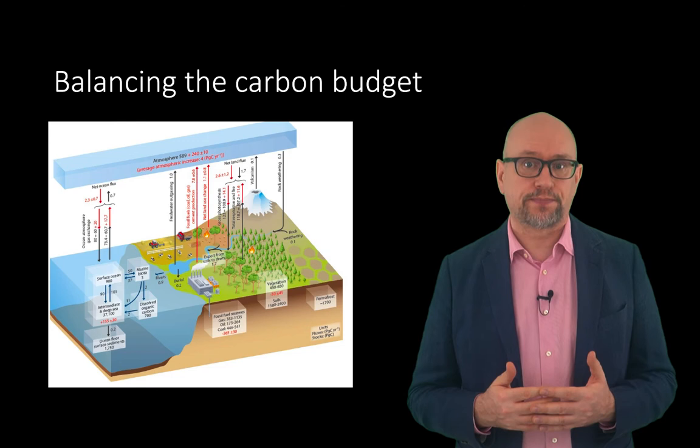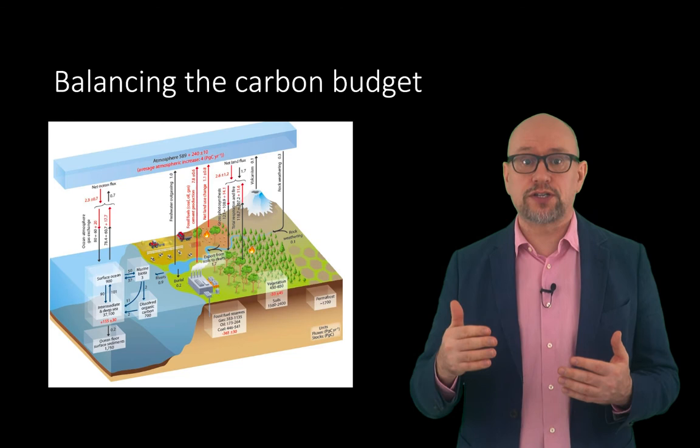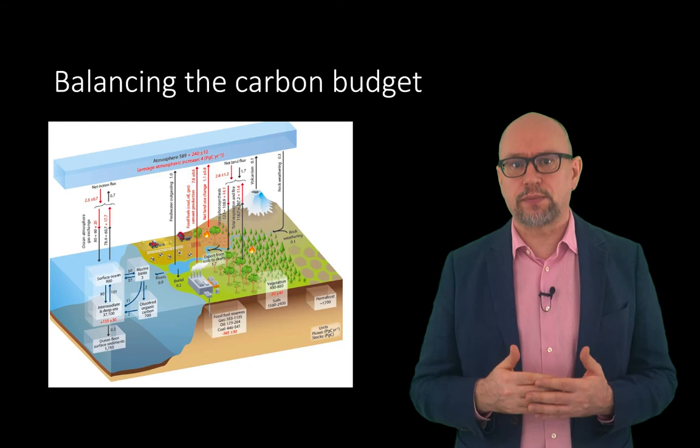A petagram is equivalent to a billion metric tonnes. The black numbers and arrows show the pre-industrial reservoirs and fluxes. The red numbers and arrows show the additional fluxes caused by human activities averaged over 2000 to 2009, which include emissions due to the burning of fossil fuels, cement production, and land use change — in total about 9 petagrams of carbon per year.